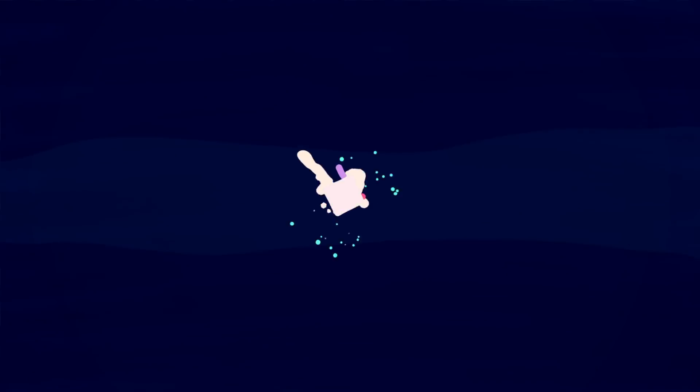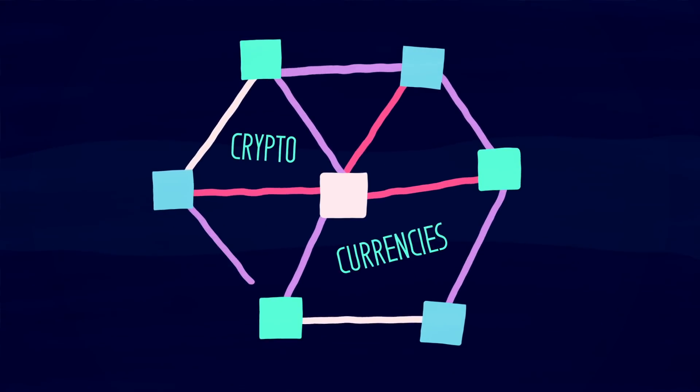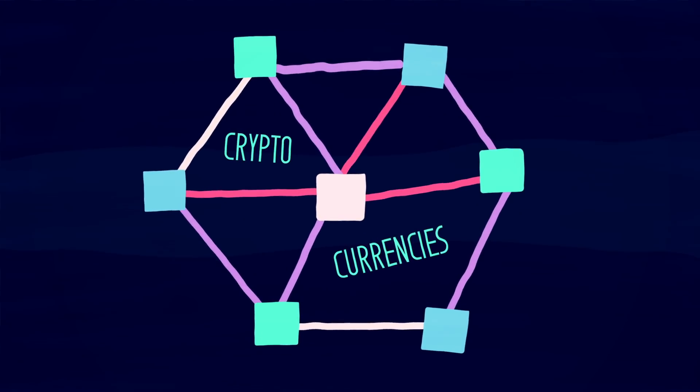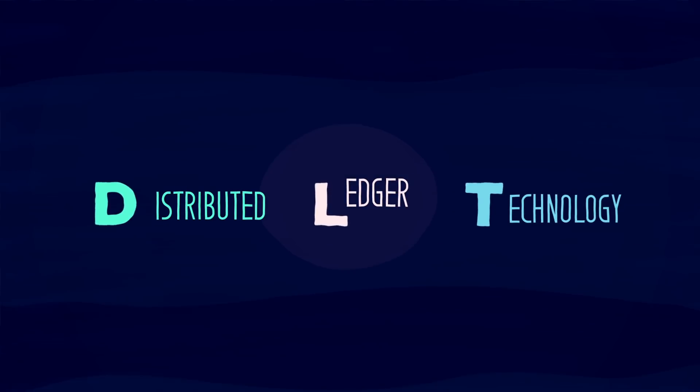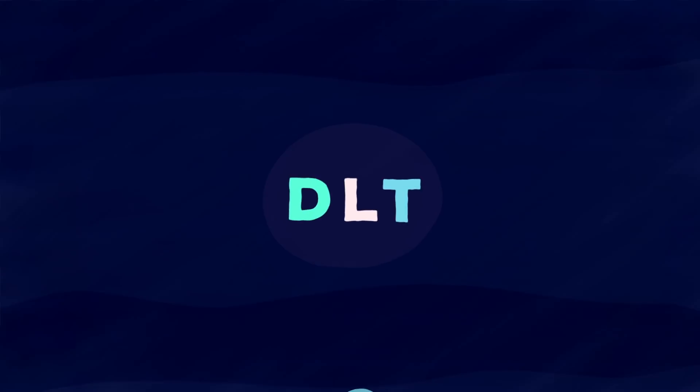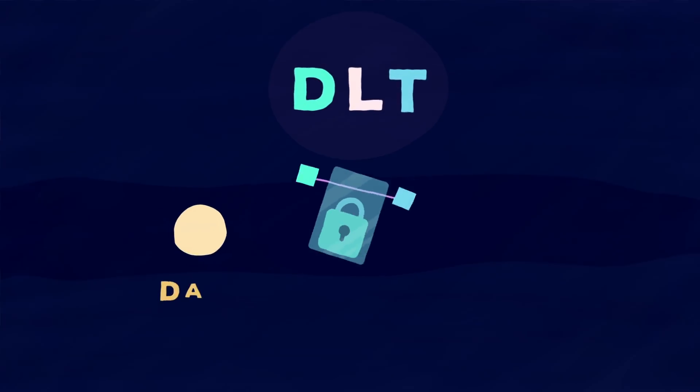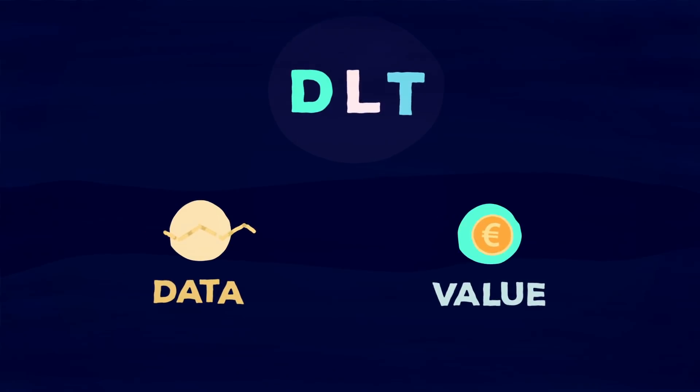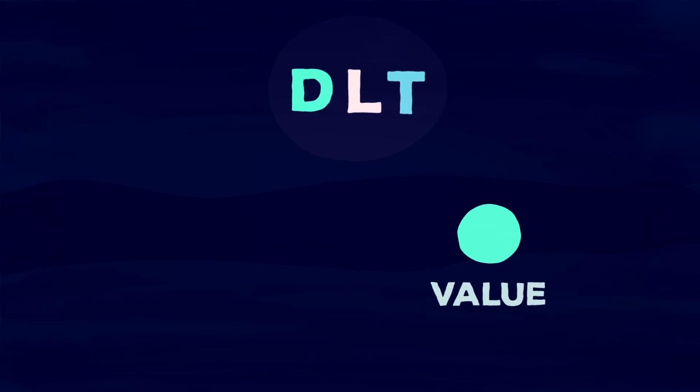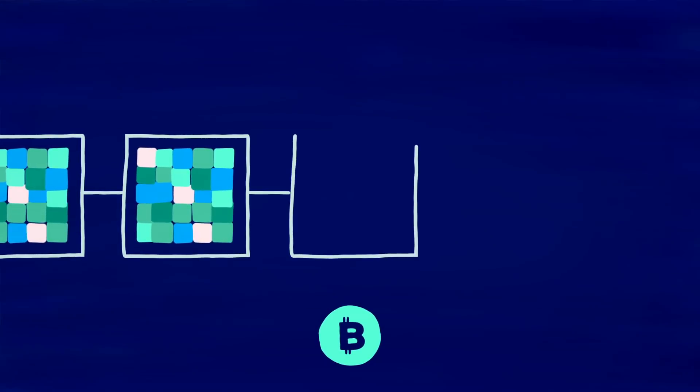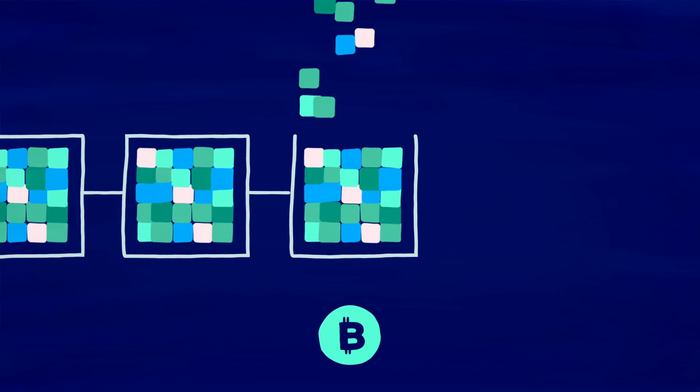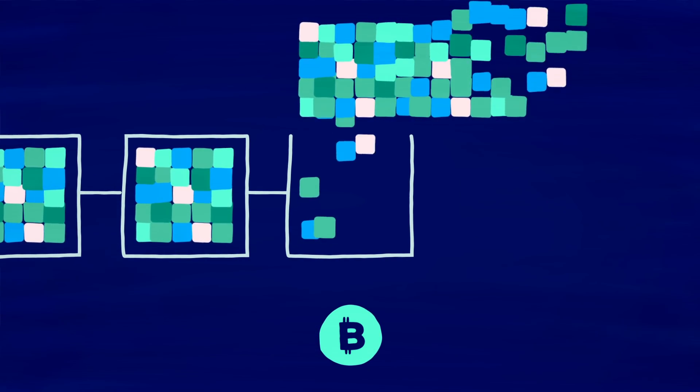Luckily there's a new kid on the block, cryptocurrencies. These are way more suitable thanks to the underlying distributed ledger technology or more simply DLT. It is secure transparent and peer-to-peer and supports both data and value transactions.